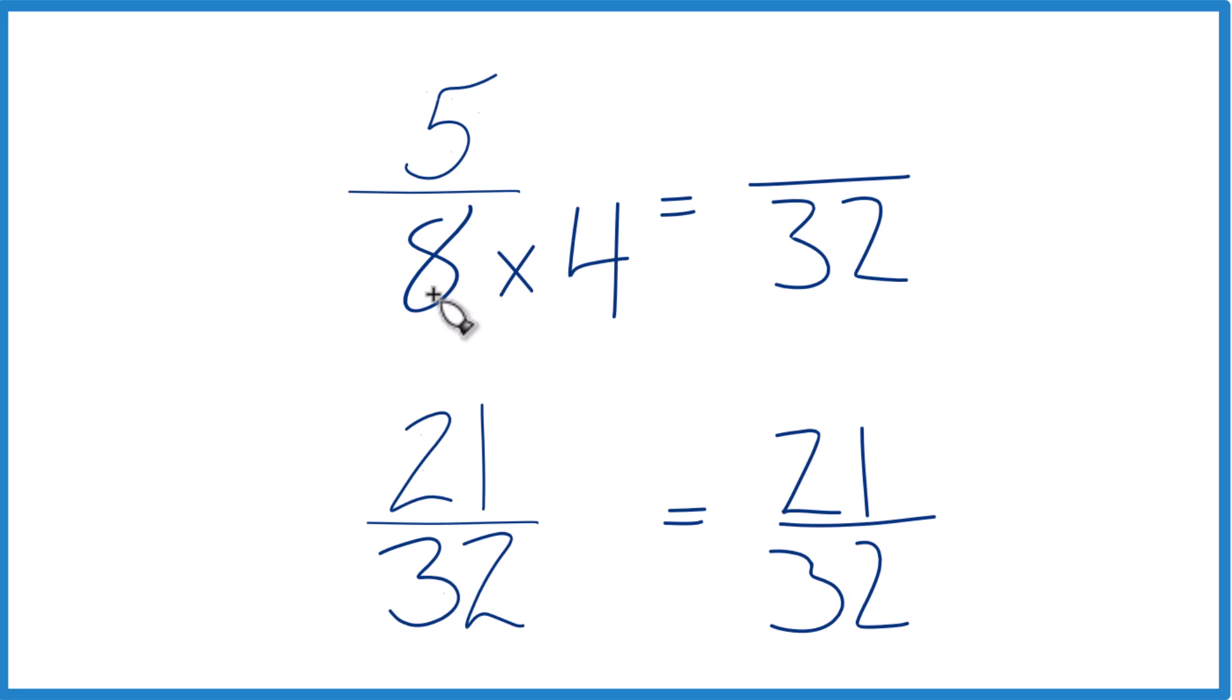So now, since we multiplied the denominator by 4, we do need to multiply the numerator by 4. 4 over 4, that's just 1. So we're multiplying by 1. We don't change the value, just the way it's represented. 5 times 4, that's 20.